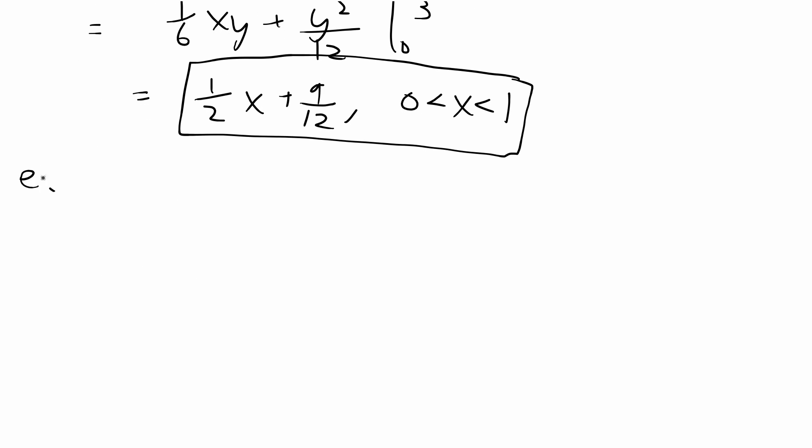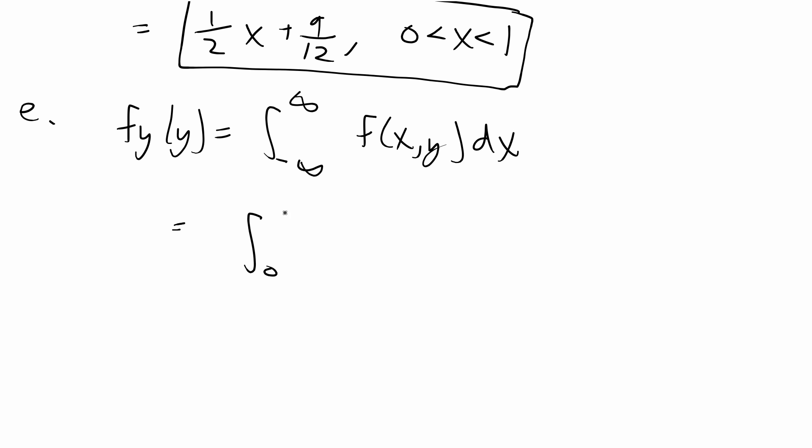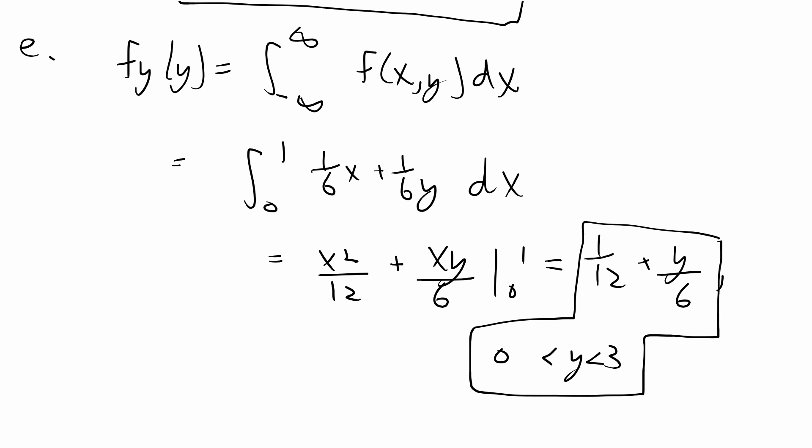For E we're doing a similar formula. f_Y(y), the marginal of Y from the joint xy is all the support when you integrate dx, so f(x,y) dx. In this case, the support we already know is from 0 to 1 for all of x and then we have (1/6)x + (1/6)y dx. This gives us x²/12 + xy/6 from 0 to 1 and when we plug in 1 we're going to get 1/12 + y/6 and this is over the whole existence of Y which is from 0 to 3. That's the final answer for E and we are done with this problem.